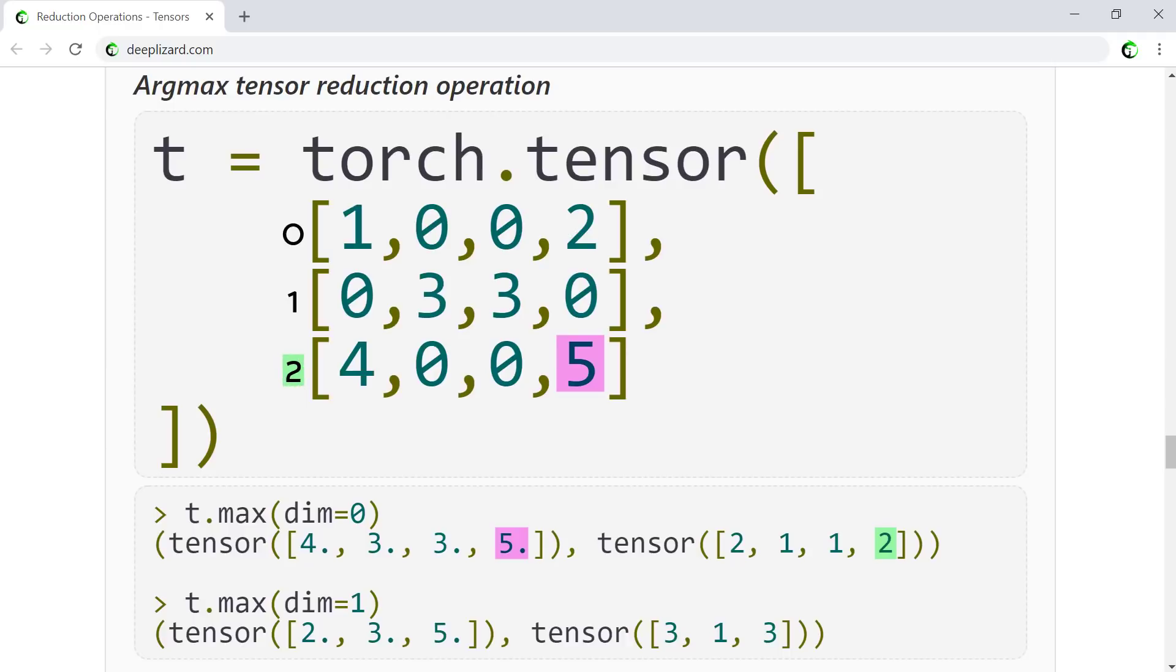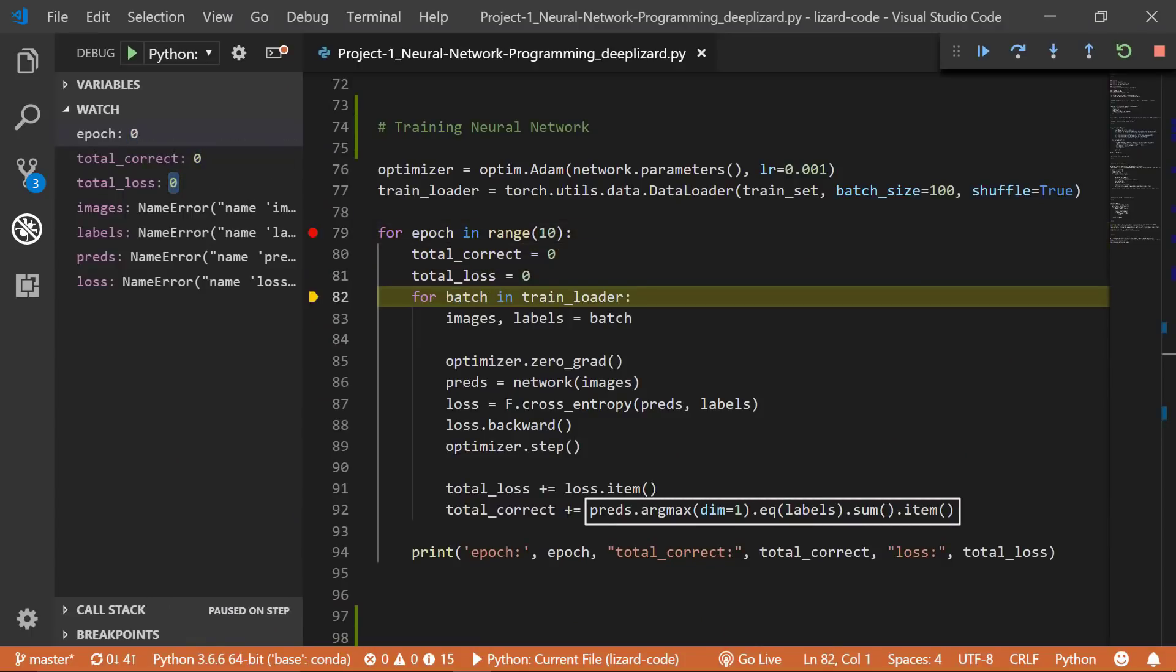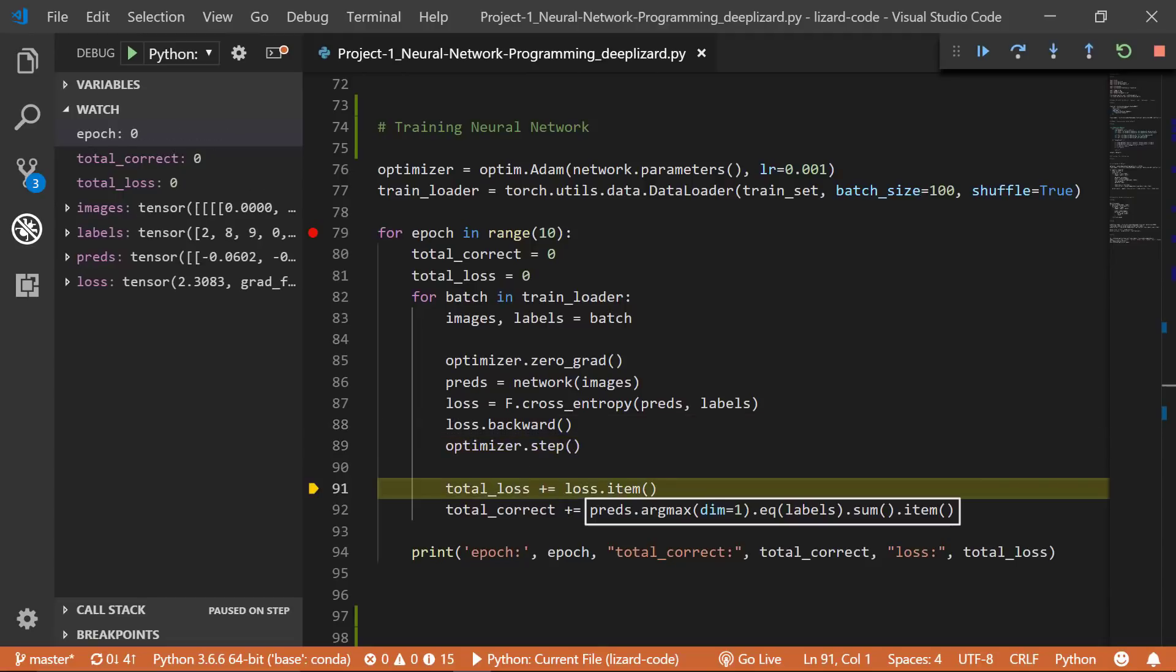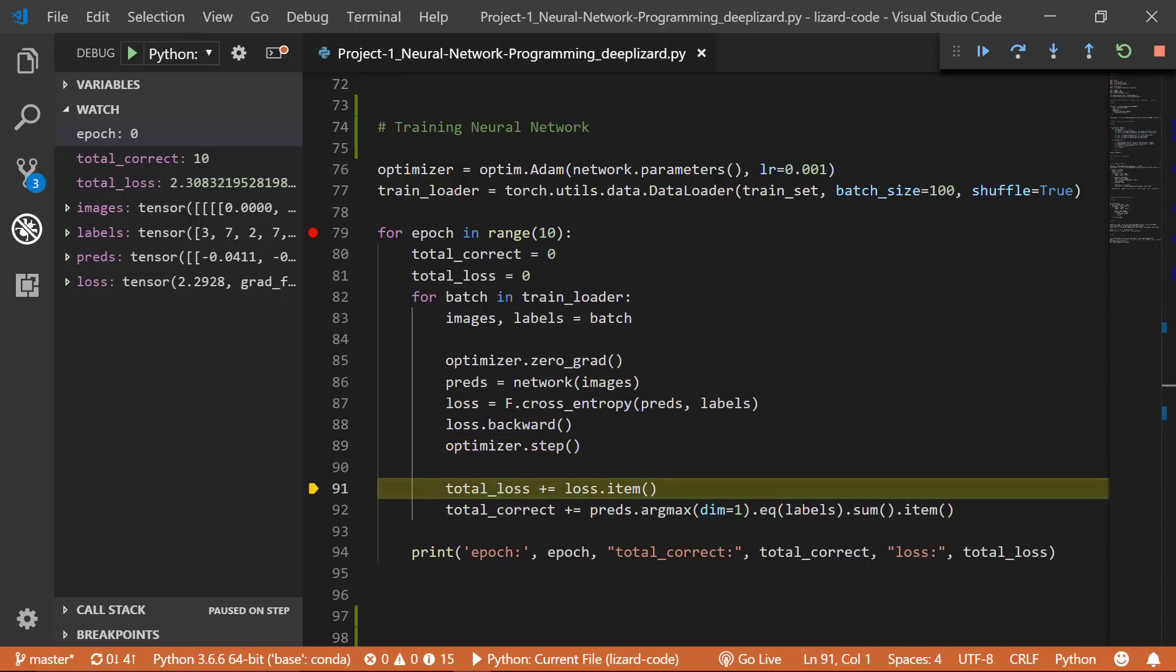For the second axis the max values are 2, 3, and 5. These values are determined by taking the maximum inside each array of the first axis. We have three groups of four which gives us three maximum values. For each array the argmax values tell us the index inside each respective array where the max value lives. In practice we often use the argmax function on a neural network's output prediction tensor. This allows us to determine which category has the highest prediction value, and this is because each index of the output tensor typically corresponds to a particular prediction category or prediction class.